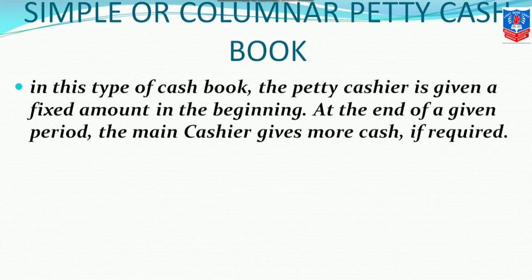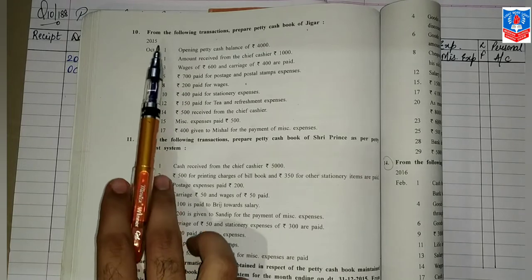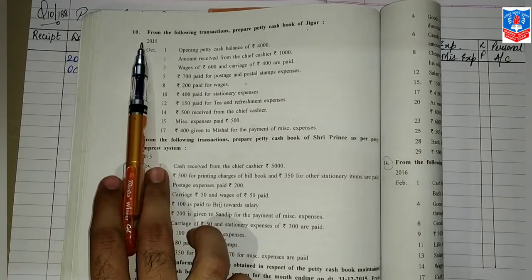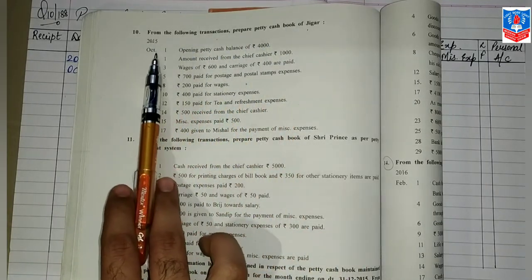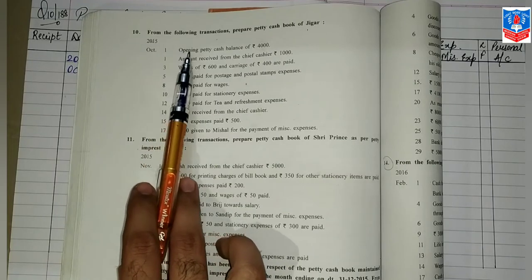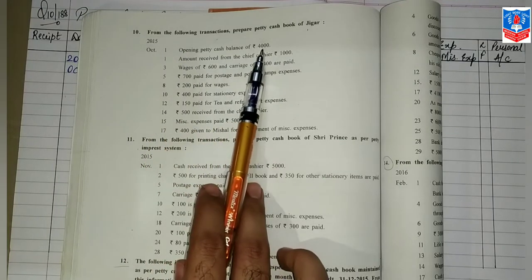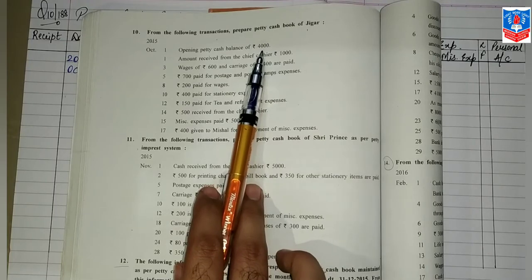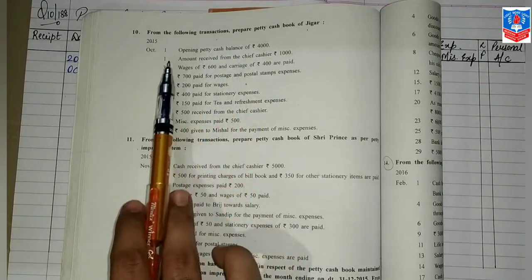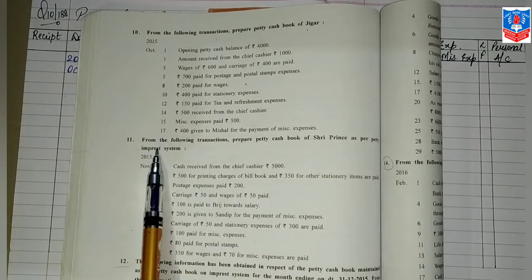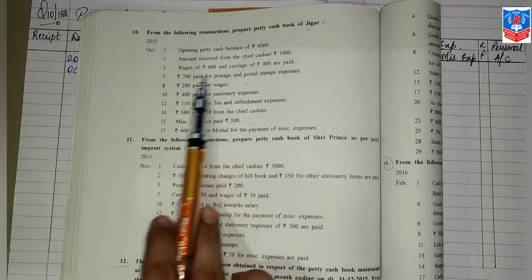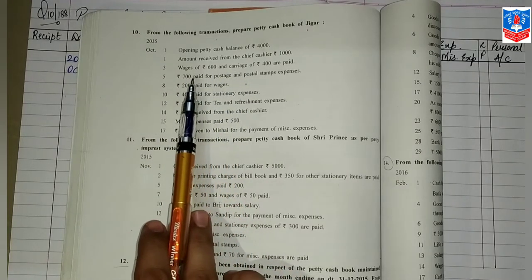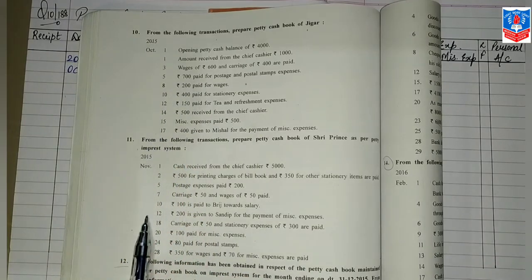So let us go through and understand what is petty cash book. We will start with question number 10, which is on your page number 188. From the following transactions, prepare the petty cash book of Jigar for 2015, October 1st. Now, for petty cash book sums, you are supposed to go through all the dates given in your question, and as and when there appear different types of expenses, you will underline them so that you come to know how many columns you are supposed to draw.